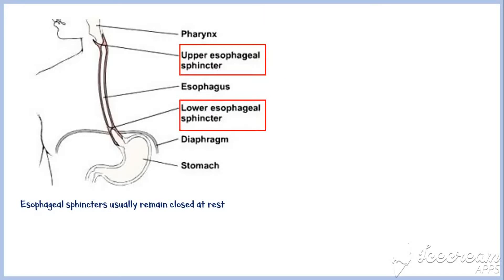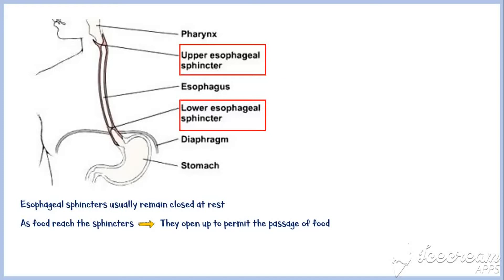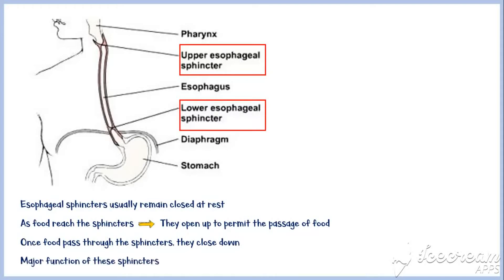As food reaches the sphincters, they open up to permit the passage of food. And once the food passes through the sphincters, they close down. Thus, the main function of these sphincters is to prevent the backflow of food particles.